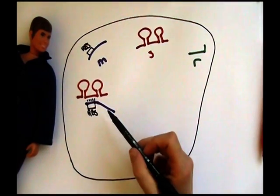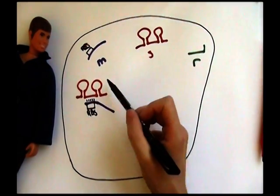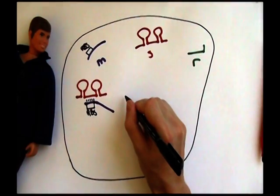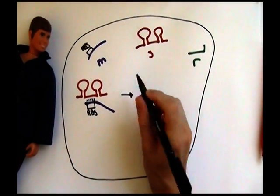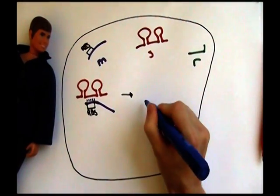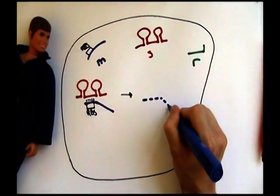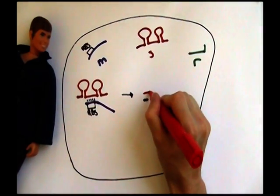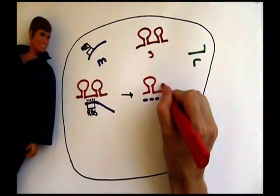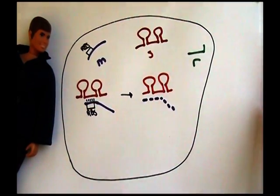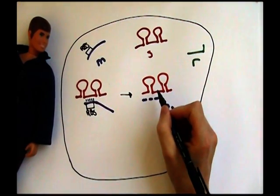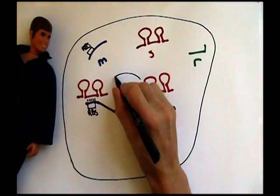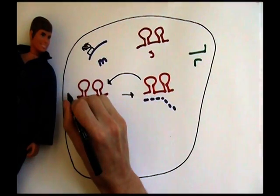Inside of the cell, this duplex formation leads to the degradation of the messenger RNA, whereas the small RNA is maintained or it is not degraded in this reaction. So in effect, the small RNA is recycled and acts catalytically in this reaction.